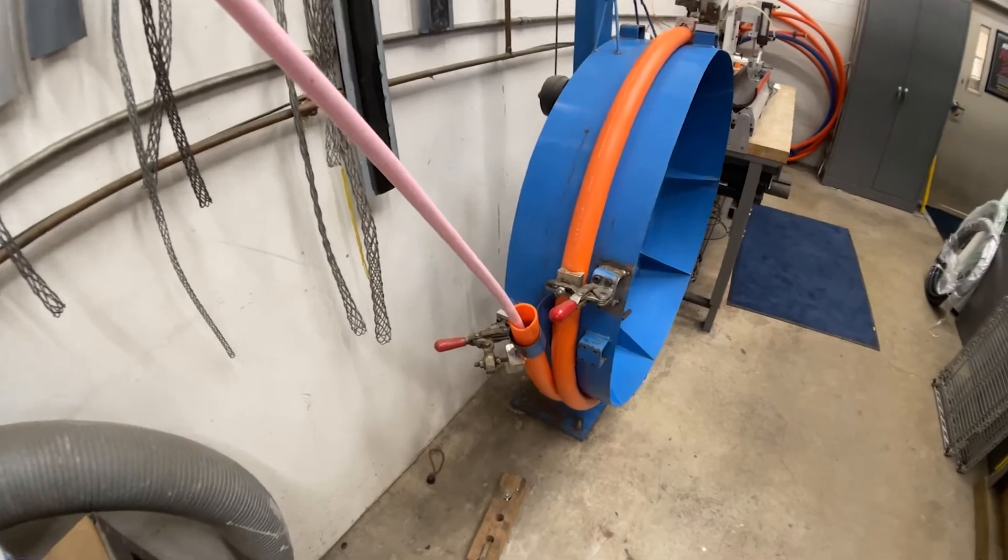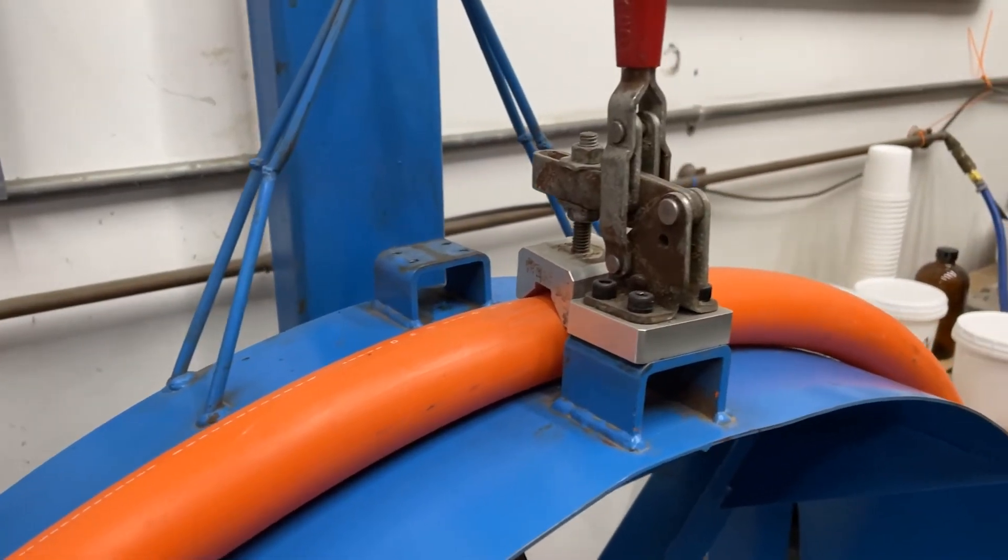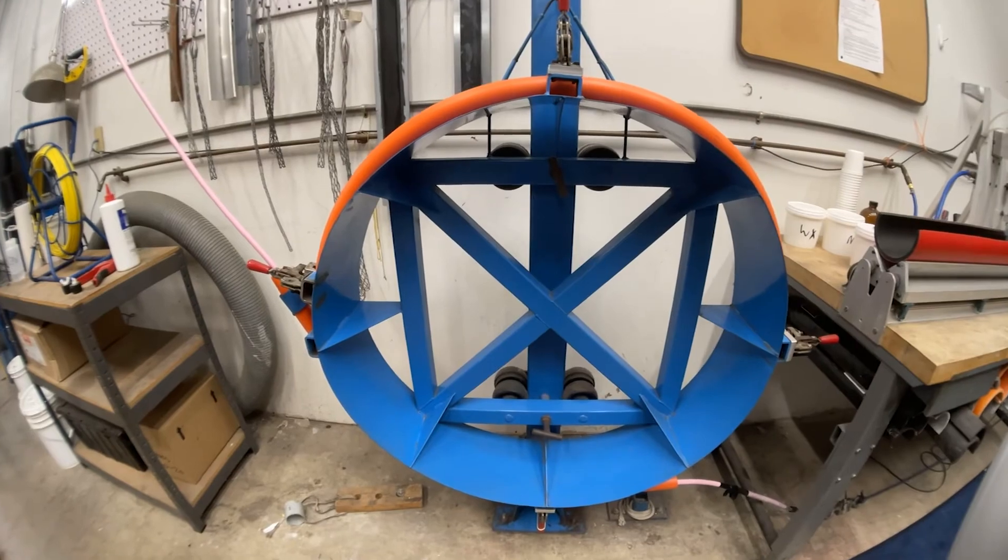In the Telcordia reel test, a continuous duct is wrapped around a drum to create 420 degrees of bend.